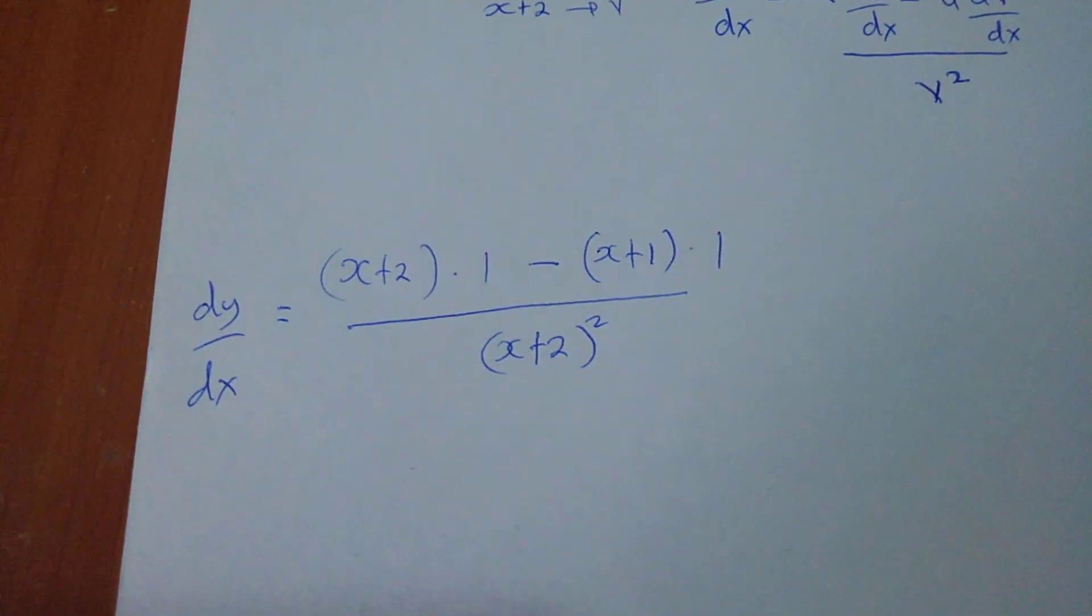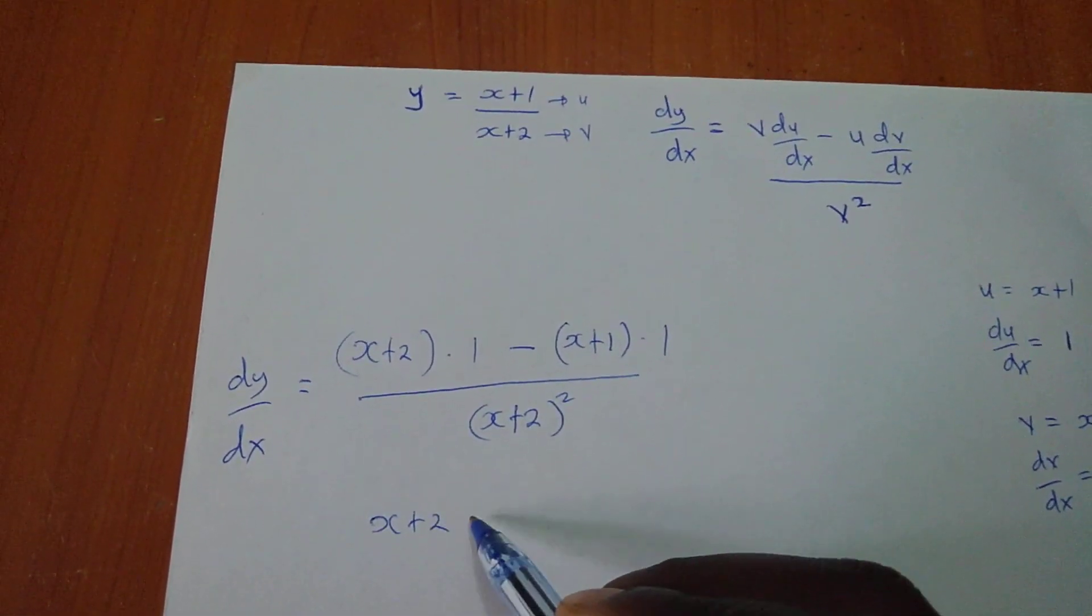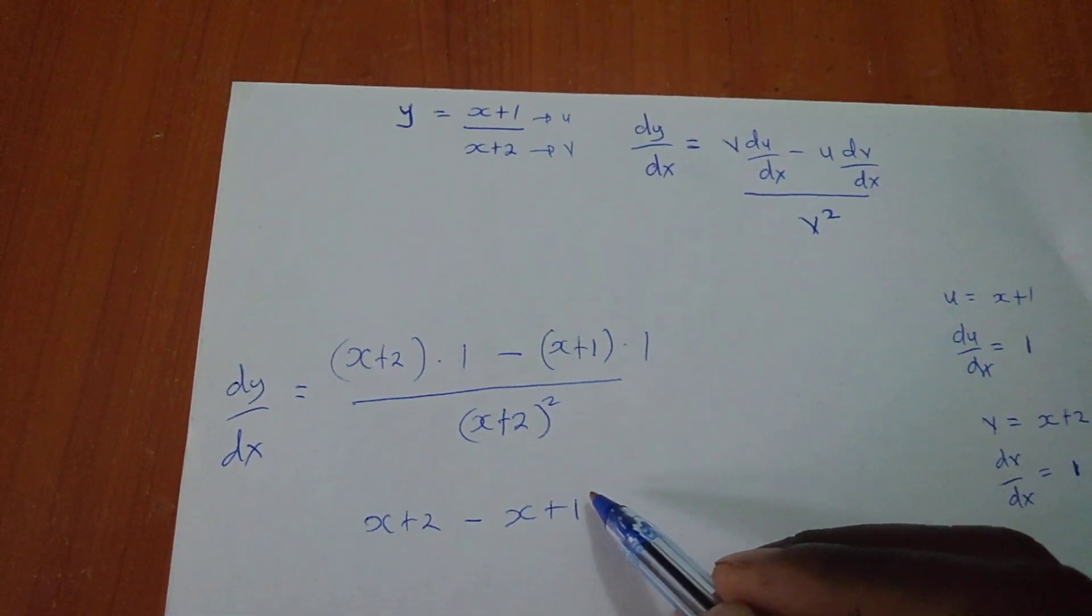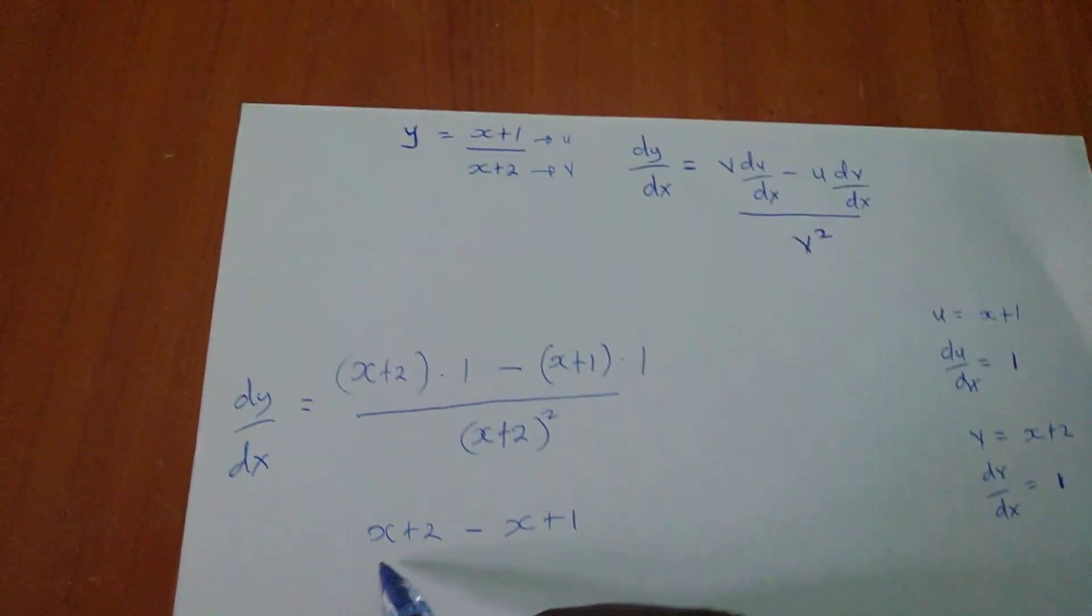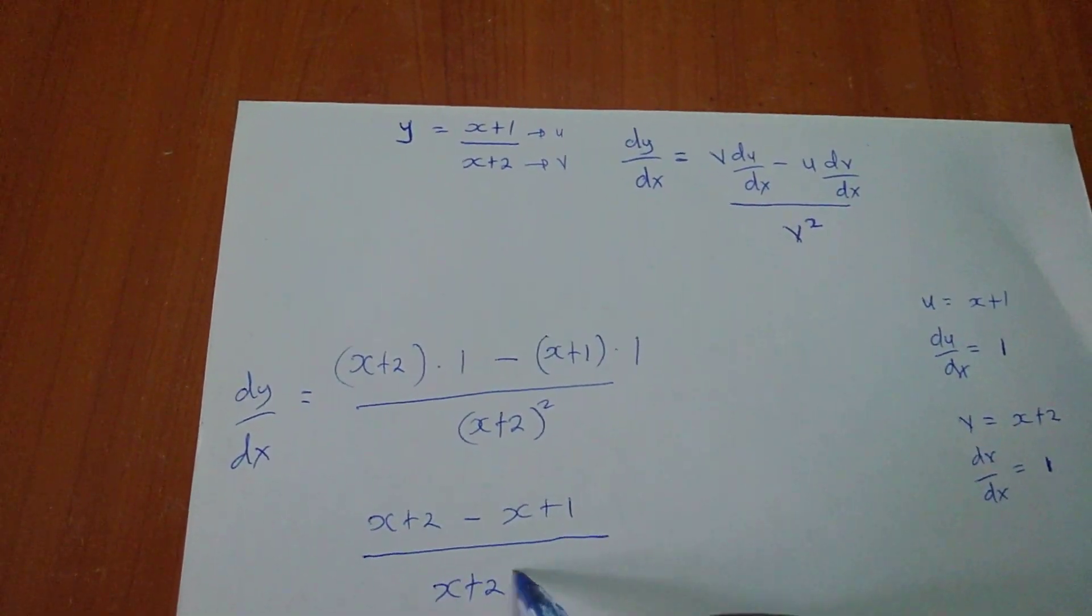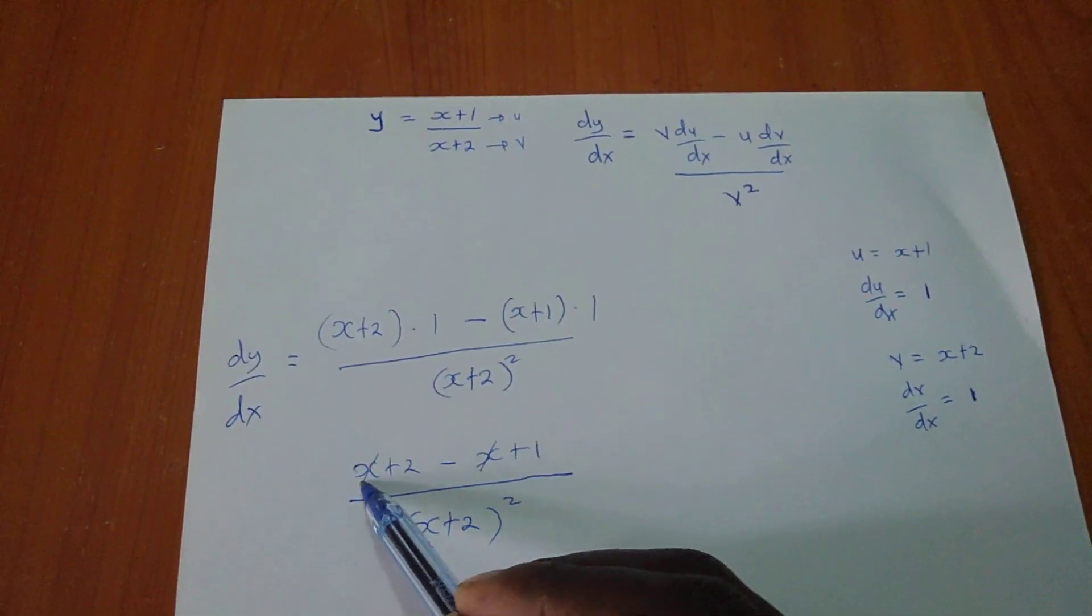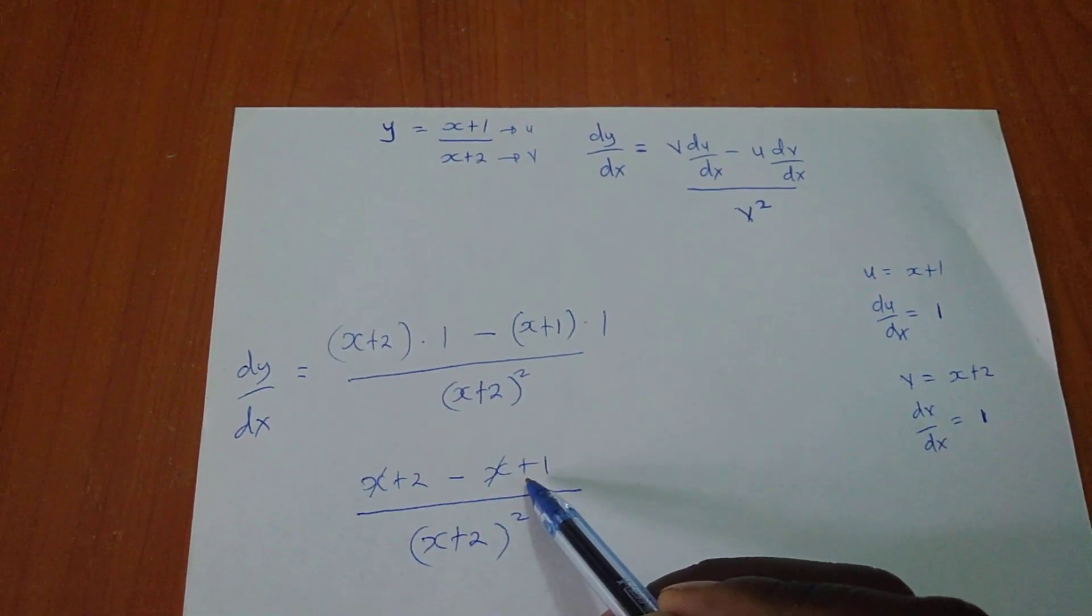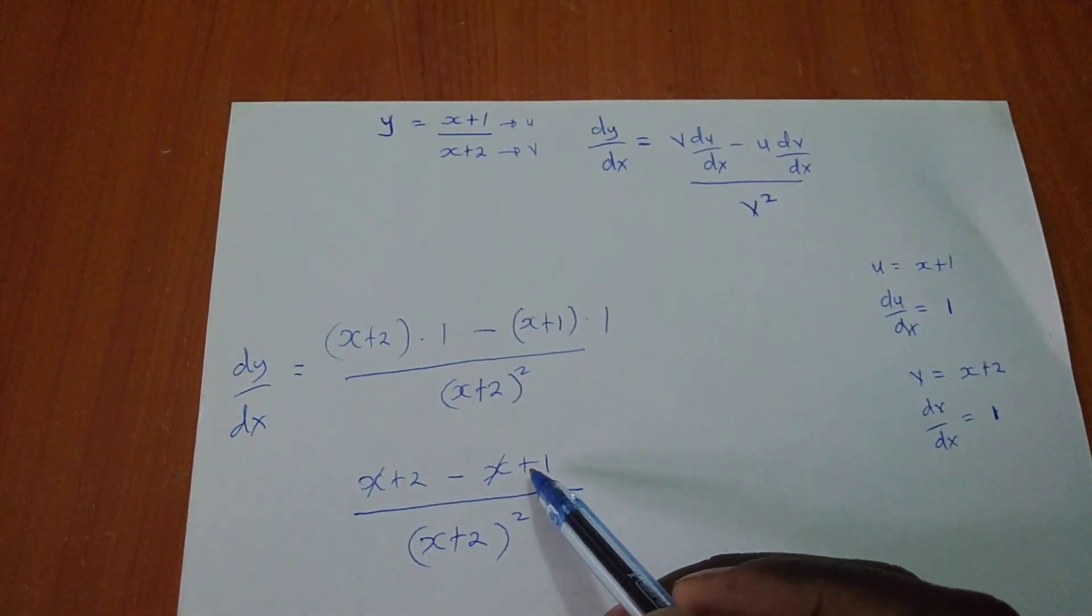I hope you are following. So, I am going to open up the brackets. I will have x plus 2 minus x plus 1 if I open the brackets from the numerator part, all over x plus 2 squared. So, these x's will cancel. I will remain with 2 minus 2 plus 1, which will give me 3.